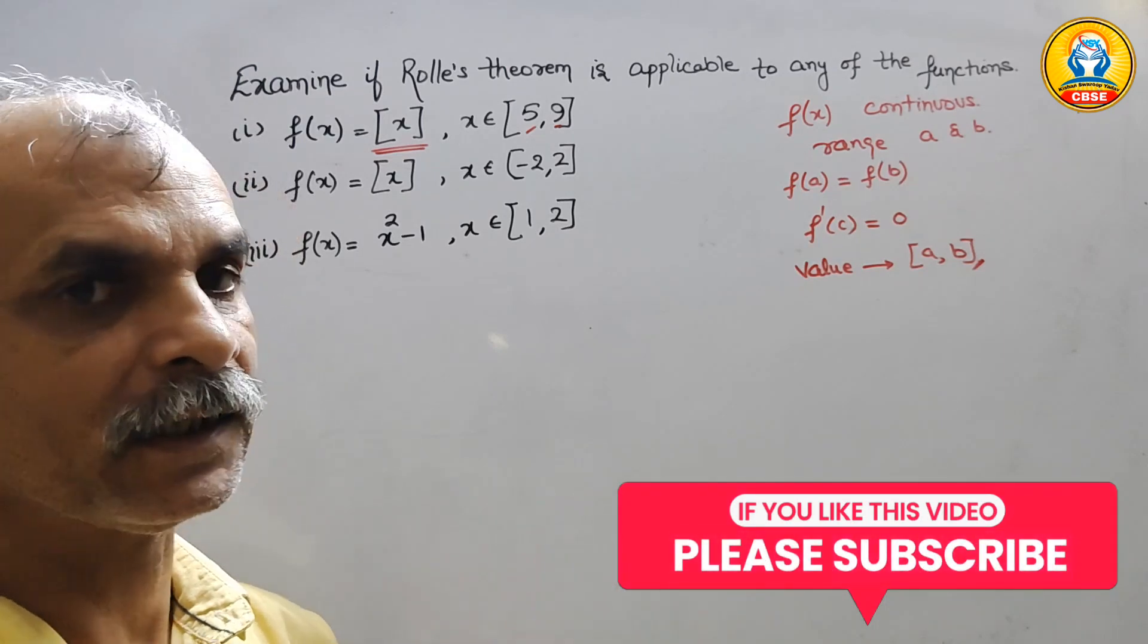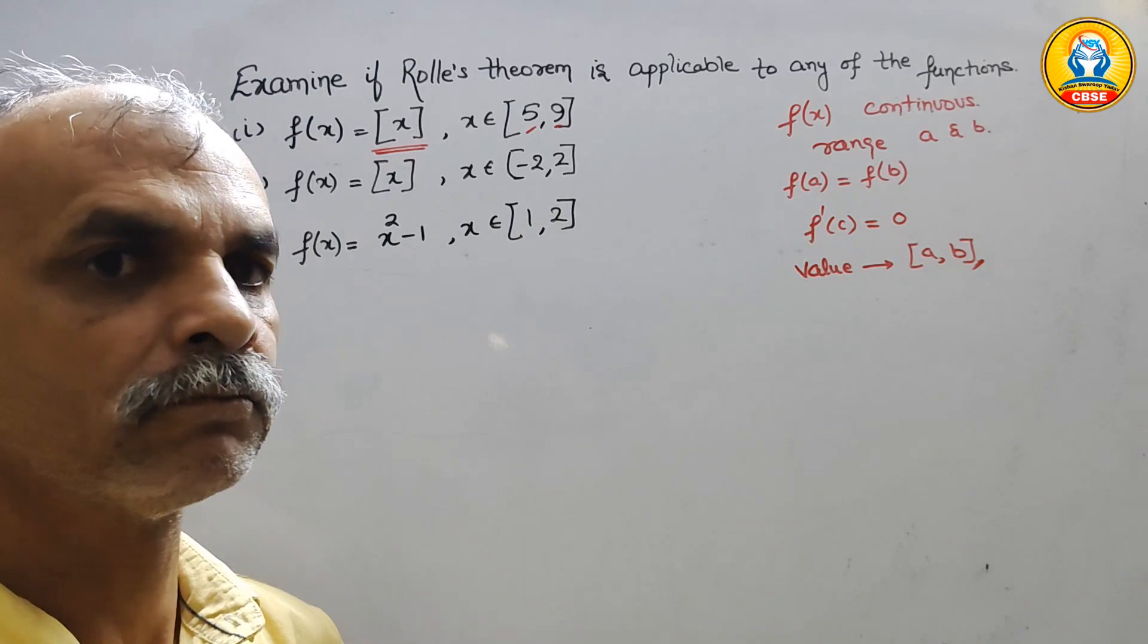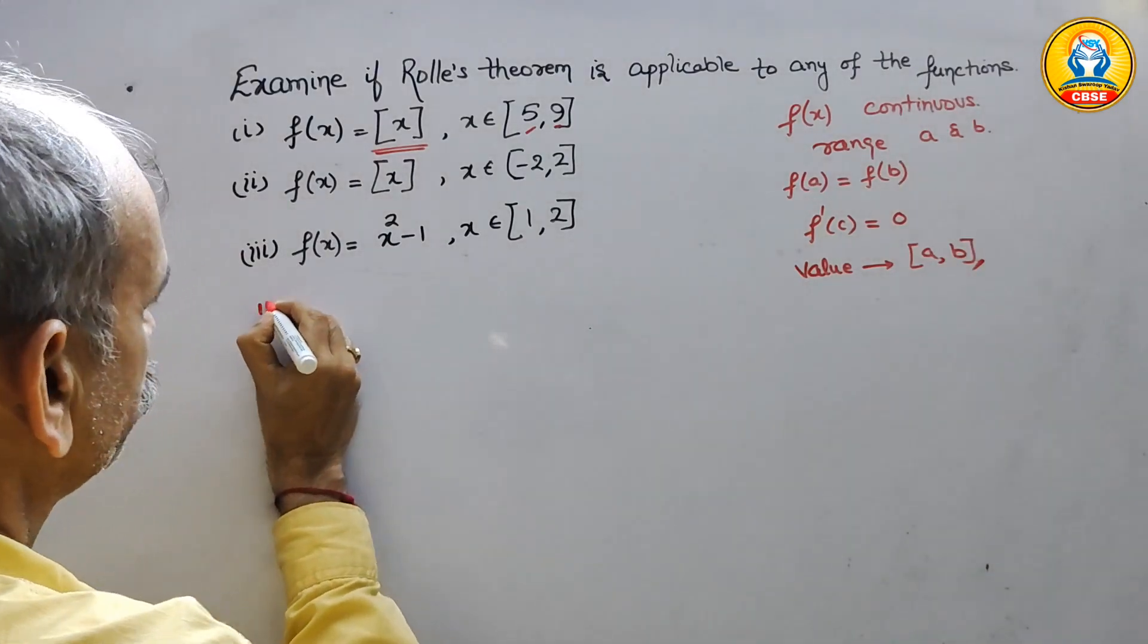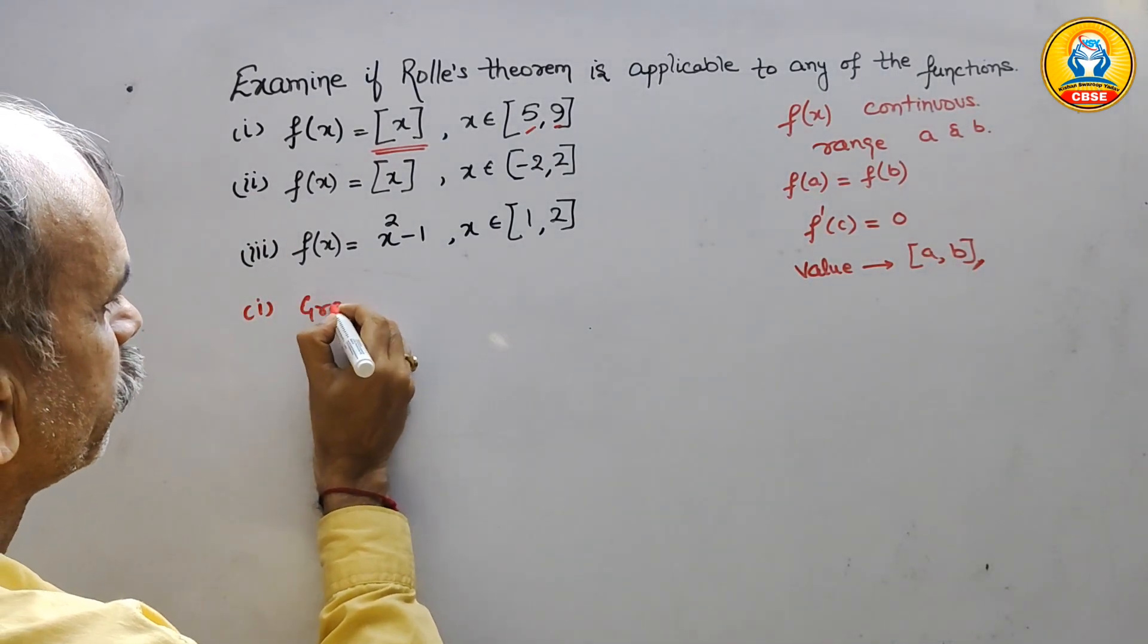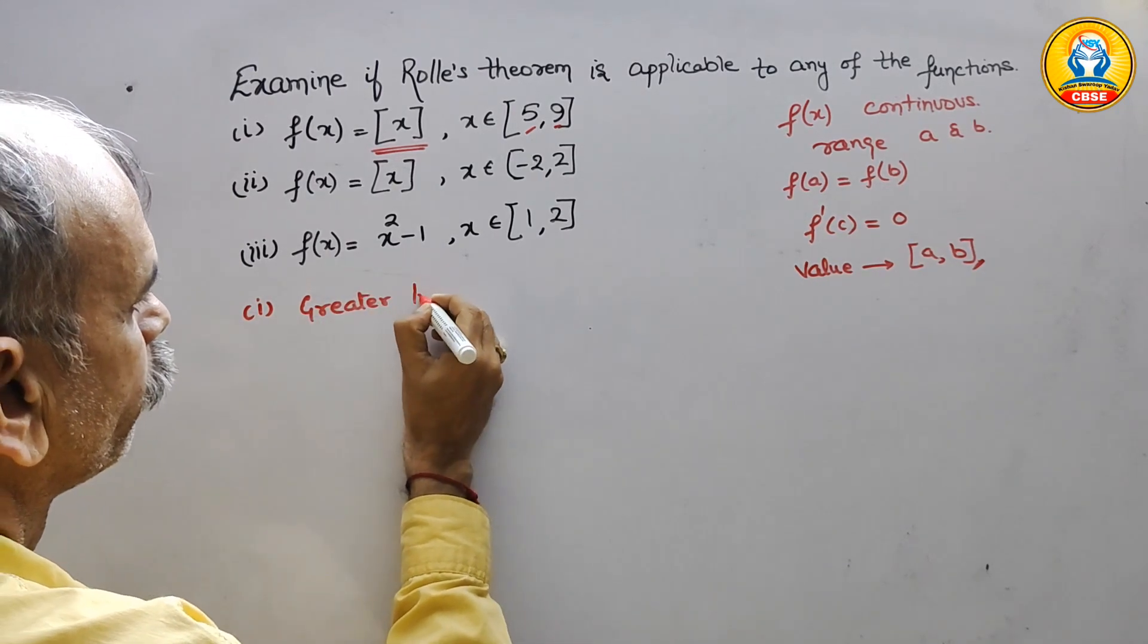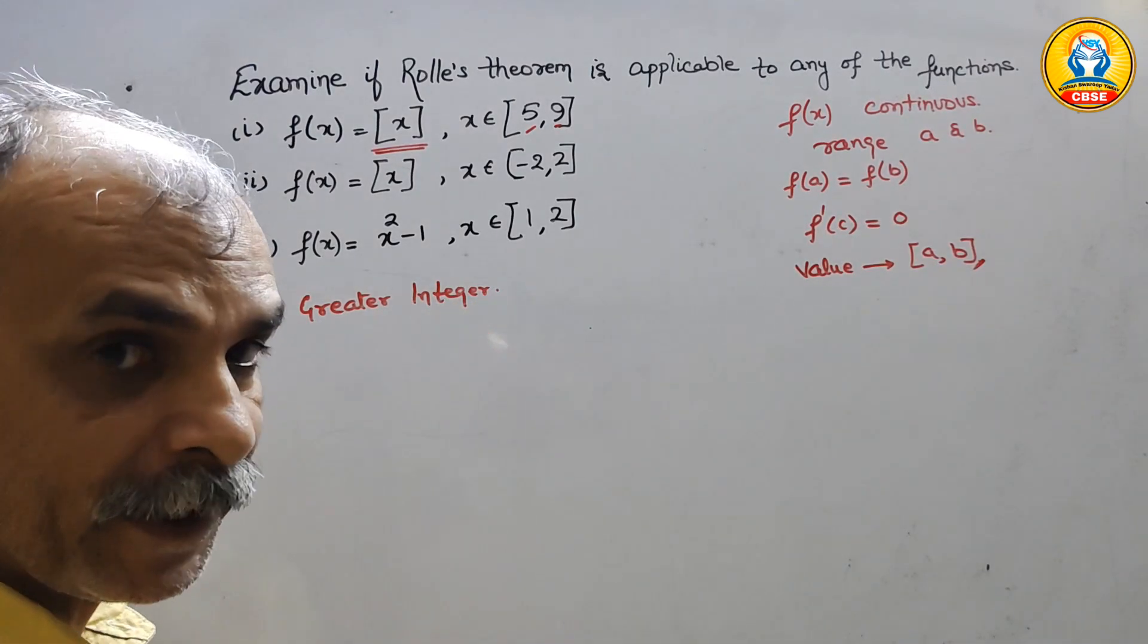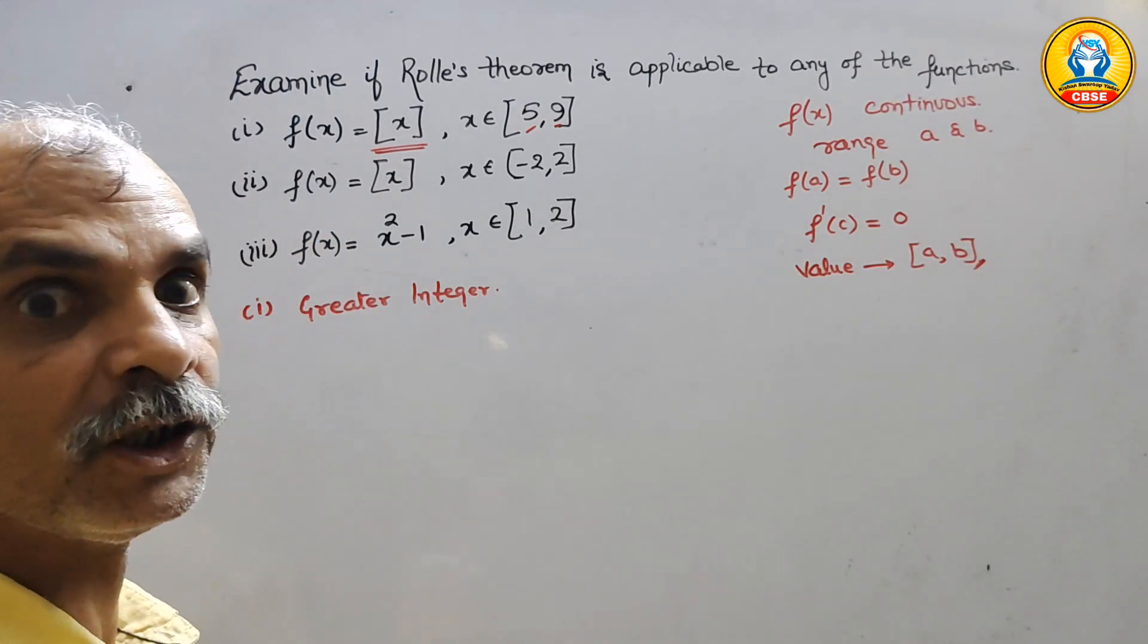And we have already learnt in greatest integer, it is not continuous. If it is a greatest integer, it is not continuous and not differentiable.